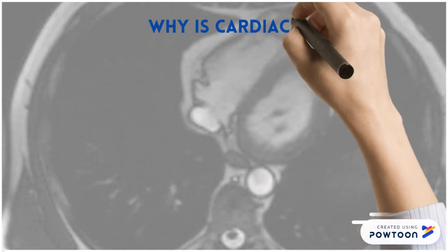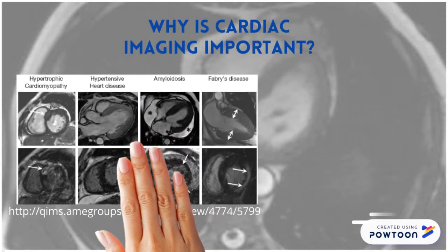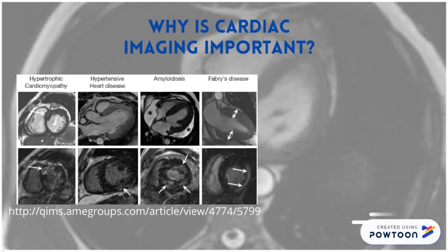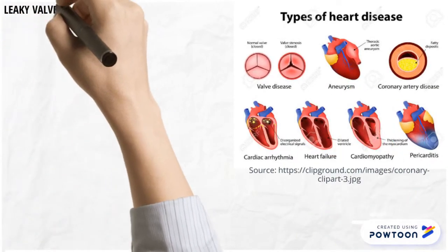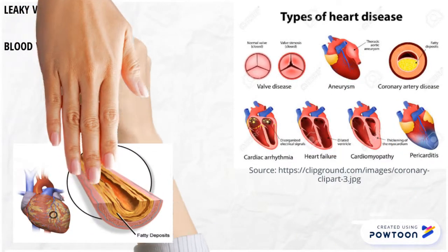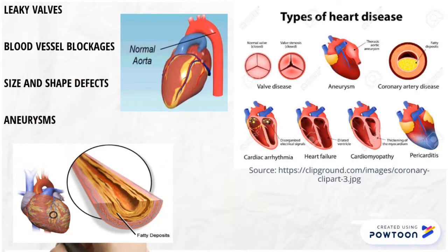Why is cardiac imaging so important? The heart is one of the most important organs in the body and is vulnerable to conditions which are difficult to diagnose without images and which require continuous monitoring. These conditions include heart disease, leaky valves, blockages in blood vessels, aneurysms and defects in size and shape of the heart.